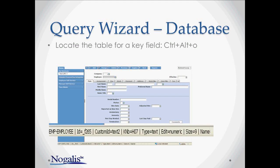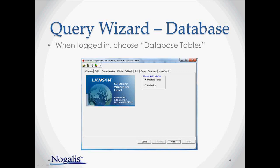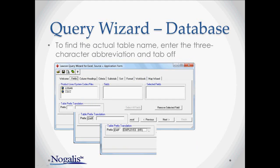One caution is to watch out for derived fields, since they're calculated on the fly and do not exist in the database. They're found most often in inquiry forms, such as forms in the 40s and 50s range, like IC40. We now know the table abbreviation EMP and the fields we need. So we're going to log into the S3 Add-ins query wizard and choose database tables. The field tab has a table prefix translation tool in the lower left corner — most people don't notice this. Type the table abbreviation and tab off the prefix field to see the table name. If I type in EMP there and tab off, it will tell me it's the employee table. Now I know that the table I'm going to is actually called Employee.